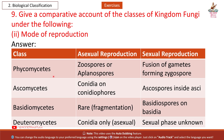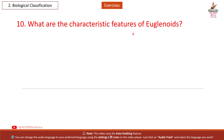Mode of reproduction in fungi — Phycomycetes: asexual by zoospores or aplanospores; sexual by fusion of gametes forming zygospores. Ascomycetes: asexual by conidia on conidiophores; sexual by ascospores. Basidiomycetes: asexual reproduction rare; sexual by basidiospores on basidia. Deuteromycetes: asexual by conidia only; sexual phase unknown.